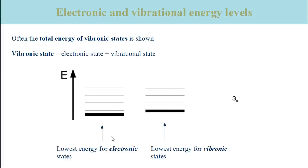When you see such an illustration, how do you know whether vibronic state energies or separate electronic and vibrational energies are shown? The answer can be found by looking at the spacing between the bold line and the first vibrational level. On the left-hand side, this spacing is much smaller than the spacing between subsequent vibrational levels, indicating the first thin line is the vibrational ground state, whose energy is half the energy difference to the next vibrational state. On the right-hand side, the spacing to the first vibrational level is the same as subsequent spacings, meaning the bold line illustrates the lowest possible energy of the system.